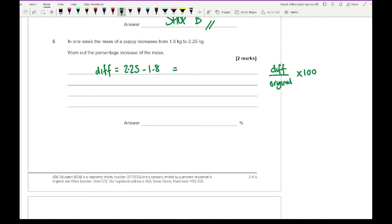That's going to be 2.25 minus 1.8. That's going to be 0.45 kilograms and the original is 1.8, so it's going to be 0.45 divided by 1.8 multiplied by 100. If I enter all of that into my calculator I get an answer of 25%.